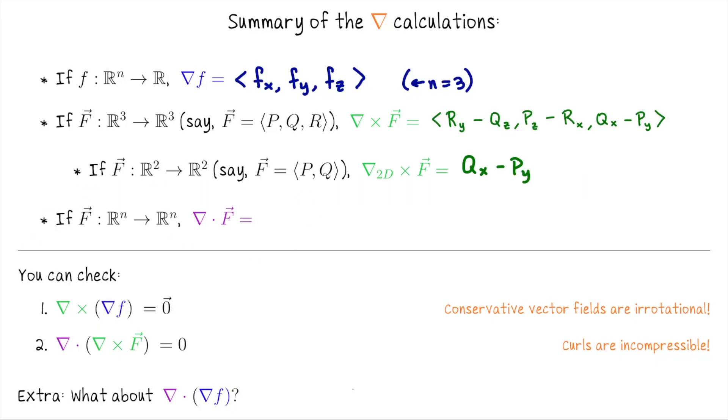And then what we just saw was the divergence of a vector field. This makes sense in any dimension. We wrote it as a dot product. If we're working in R3, we would say the divergence of F is dP/dx plus dQ/dy plus dR/dz. And as we just discussed, that measures the tendency of a vector field to expand or contract.